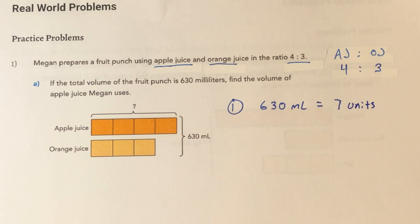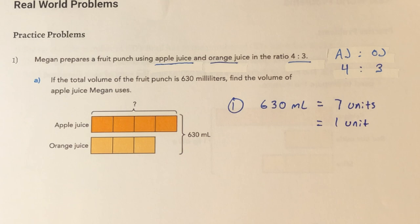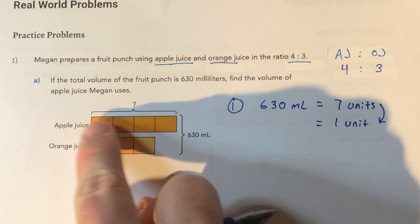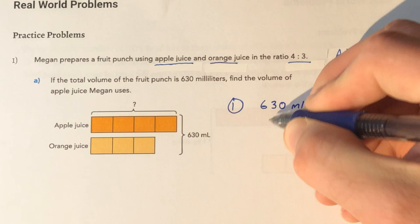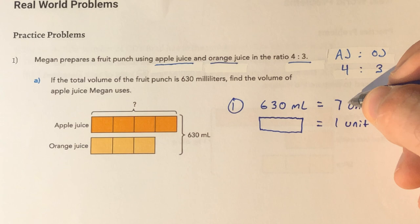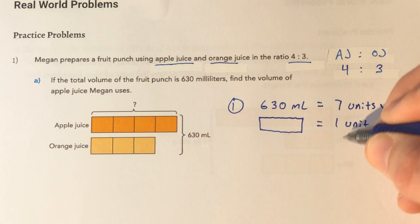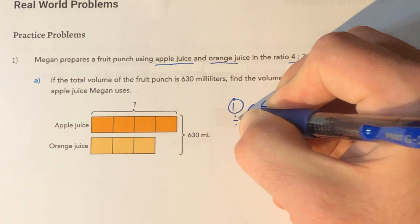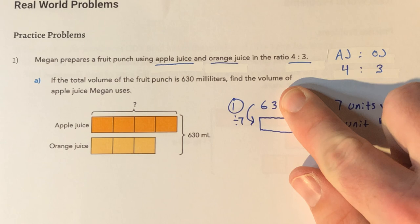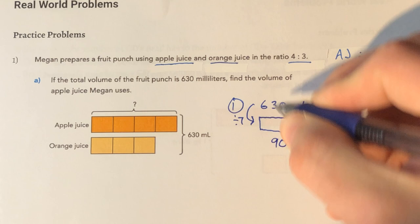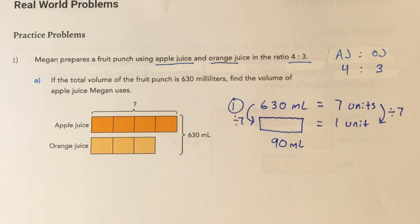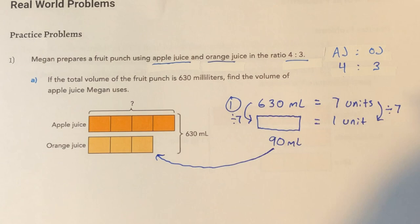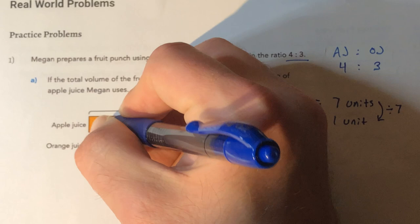What do I want to know? I want to know what 1 unit is worth — that's what you always want to know. Because if I know what 1 is worth, I can multiply by however many I need to get my answer. If I want to know how many milliliters 1 unit is worth, I could go left or I could go down. I'm going to go down because it's easy to go from 7 to 1 using multiply or divide only. So 7 divided by 7 is 1. What you do to one side, do to the other. So 630 divided by 7 — well, 63 divided by 7 is 9, add that 0 and you get 90. So 630 divided by 7 is 90 milliliters.